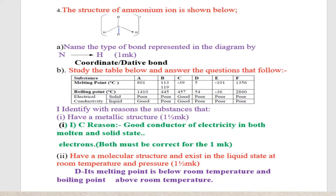Roman two: Identify the substance that has a molecular structure and exists in liquid state at room temperature and pressure. That substance is D. The reason is its melting point is below room temperature and its boiling point is above room temperature. If there is any other point you have, you can write it for us in the comment section.